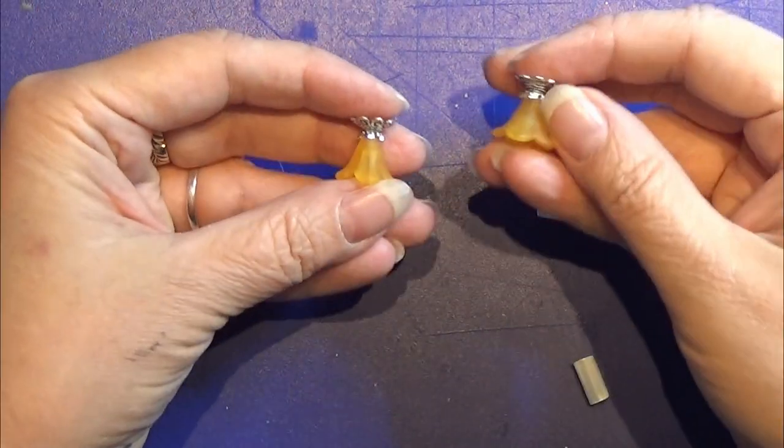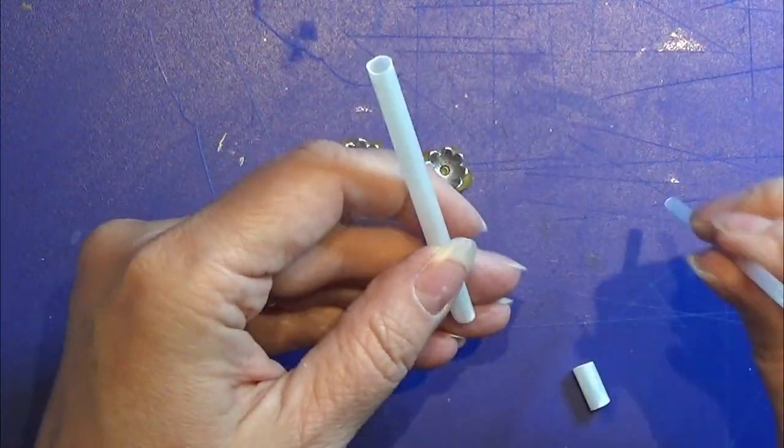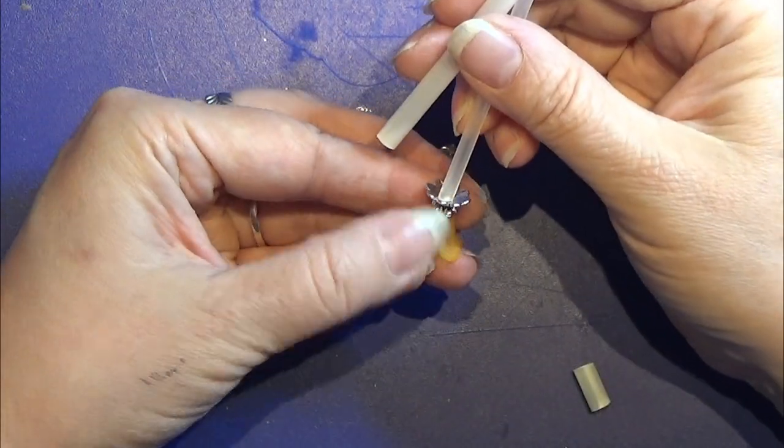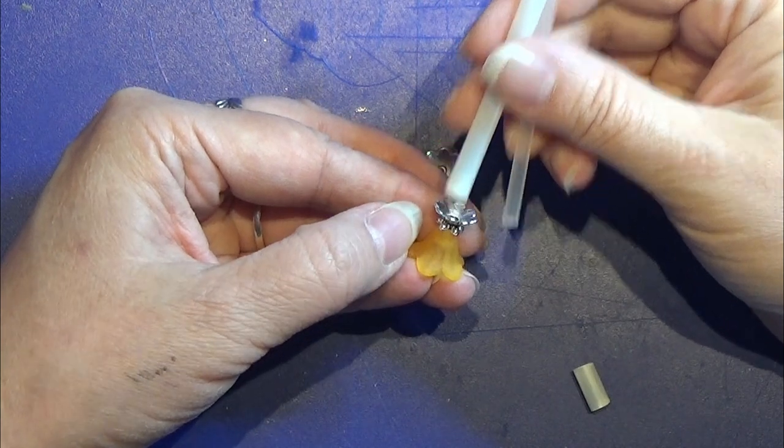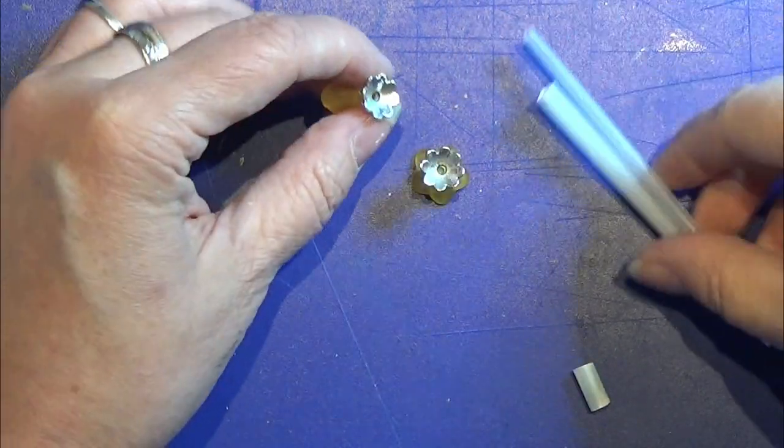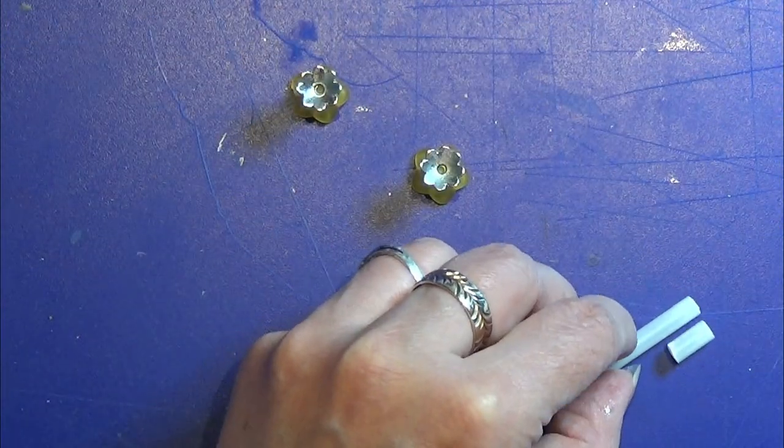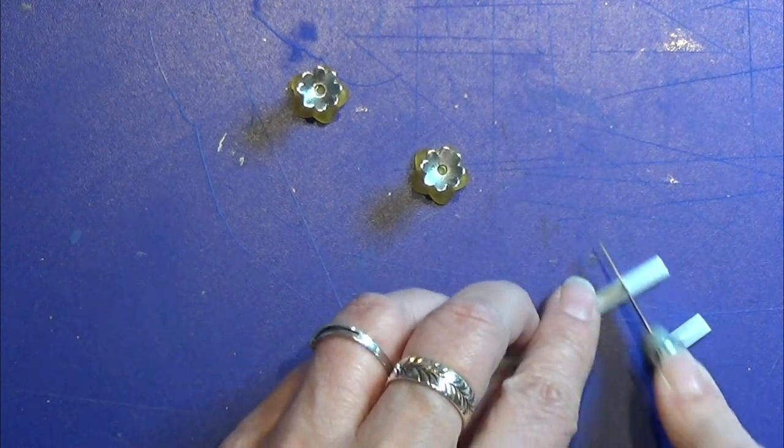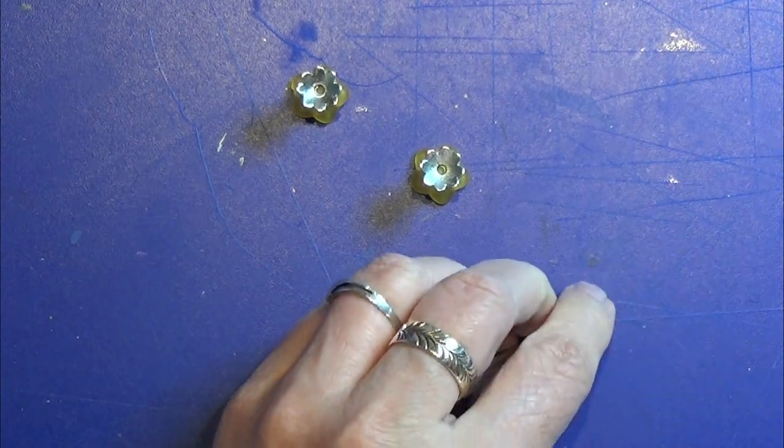For another idea, you can use a straw and turn this little cup upside down and place a straw on top of it as a candlelight. And I'm going to show you here how I do the candles.